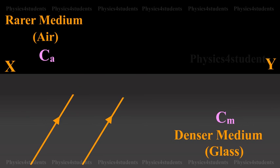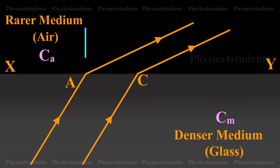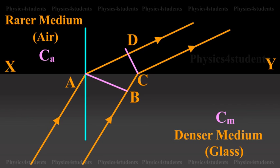A plane wavefront AB passes from a denser medium to a rarer medium. It is incident on the surface with angle of incidence i. Let r be the angle of refraction.